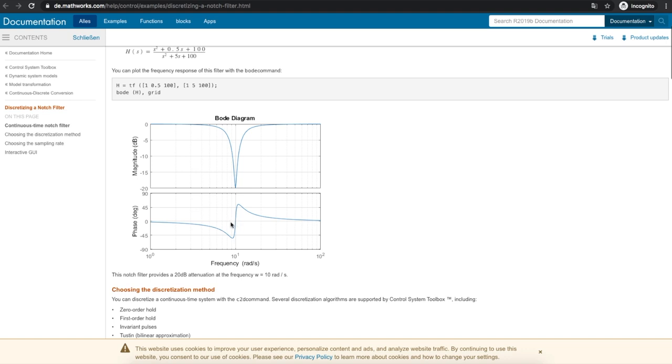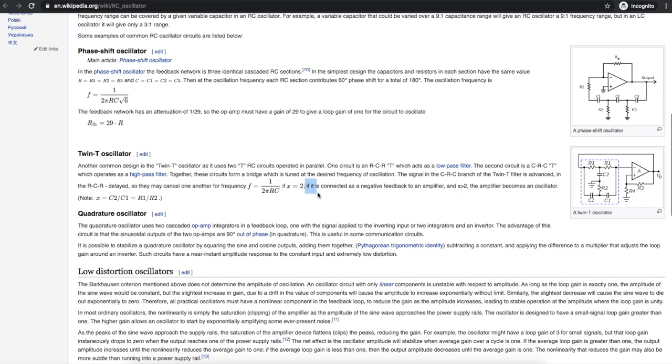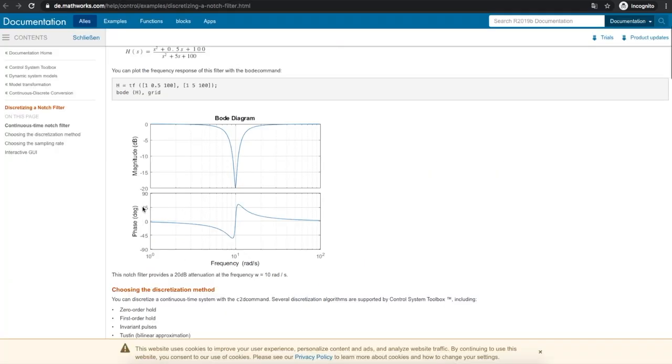we actually get a zero-degree phase shift where we want 180. But it awkwardly states right here that essentially, instead of making this resistor exactly half of the other two, if we make it slightly less than half, the amplifier becomes an oscillator. And that's because this phase diagram totally changes, and we can get 180 degrees.